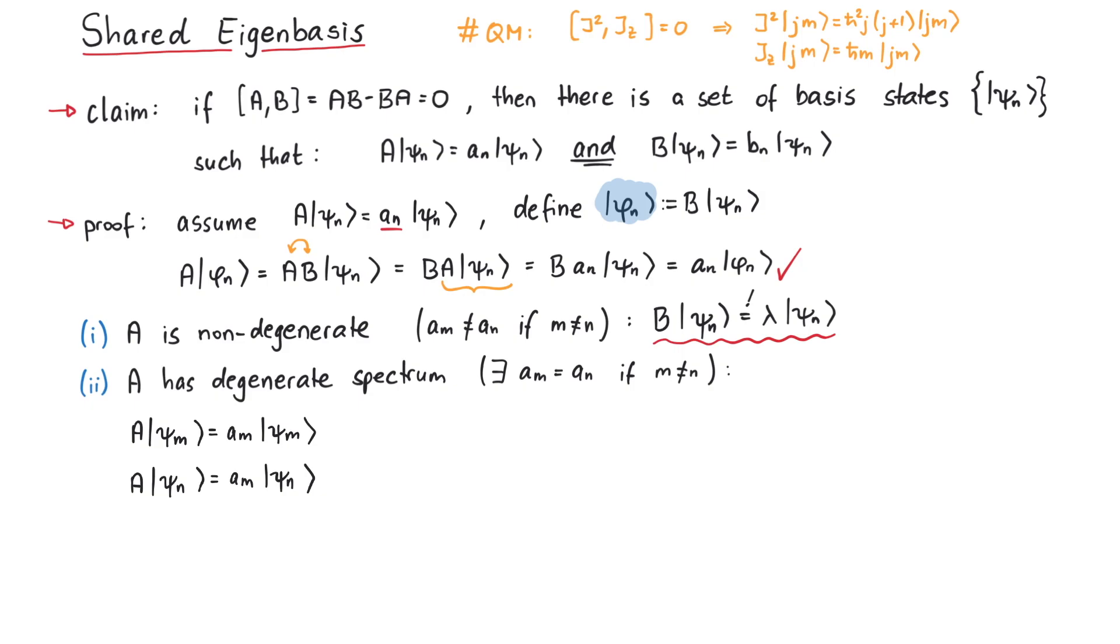However, we don't know exactly how psi_m,n and phi_m,n are related. Therefore, we write them as a general linear combination.